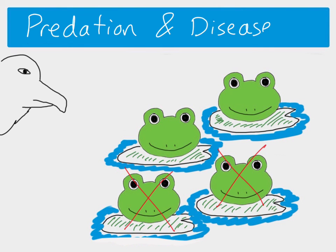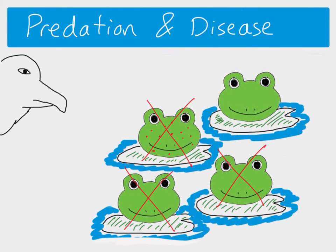The final selection pressure is disease. Remember, a lot of these characteristics involve the phenotype but aren't necessarily visible to us. If a new disease is introduced into the environment, some individuals may have better immune systems than others. This frog did not have such a good immune system, succumbed to the disease, and therefore dies.